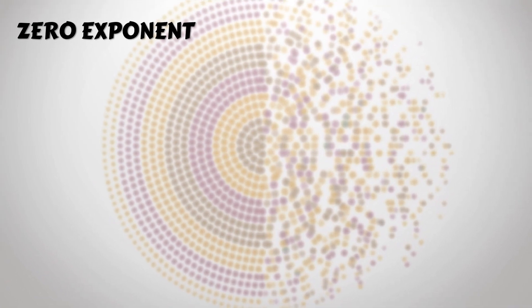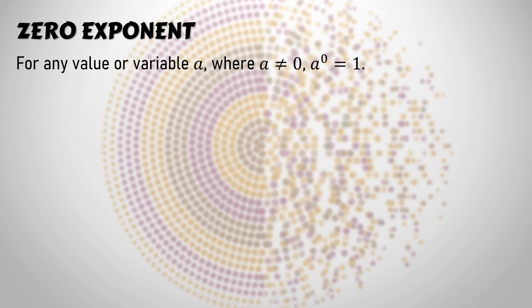Let's start with zero exponent. For any value or variable a, where a is not equal to zero, a raised to zero is equal to one. This means that when our base is one or more, and it has an exponent of zero, that is always equal to one.